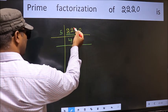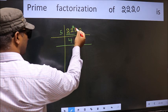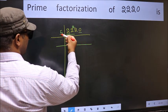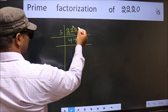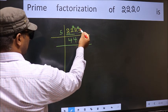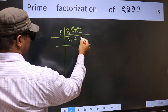22 minus 20, 2 carried forward 22. A number close to 22 in 5 table is 5 times 4 is 20. 22 minus 20, 2 carried forward 20. When do we get 20 in 5 table? 5 times 4 is 20.